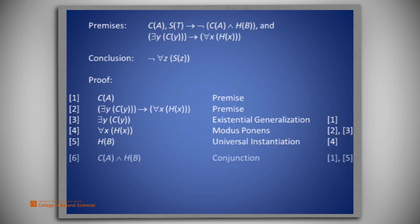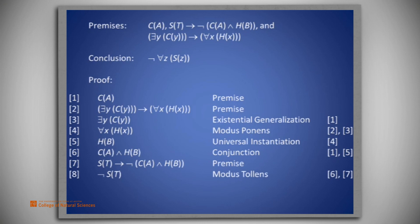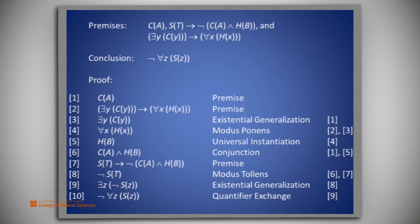Conjunction applied to lines 1 and 5 results in c(a) and h(b) on line 6. Now we introduce the second premise: s(t) implies the negation of c(a) and h(b) on line 7. Modus ponens applying to lines 6 and 7 results in not s(t) on line 8. An existential generalization of line 8 produces line 9: there exists a z such that not s(z). Finally, a quantifier exchange applied to line 9 results in line 10: the negation of for all z, s(z). That is the conclusion we sought, and the proof is complete.